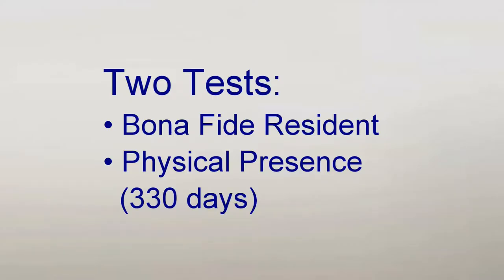To qualify, the expat must have his or her tax home outside the US and meet one of two tests: the bona fide resident test and the physical presence test. Bona fide resident means he or she genuinely lives in the country and has not declared to that country that they don't live there. Visitor visas don't qualify for bona fide resident. The expat must be a bona fide resident of a foreign country for a period that includes a full tax year, usually a full calendar year.